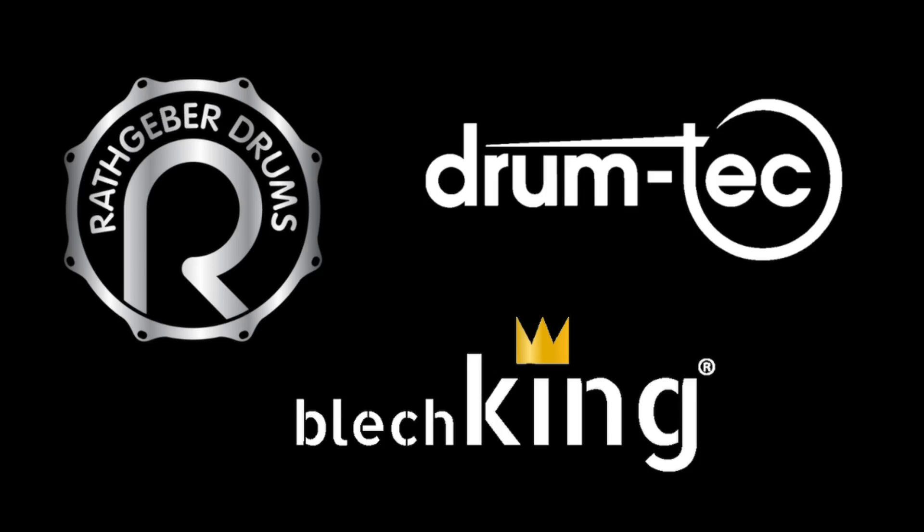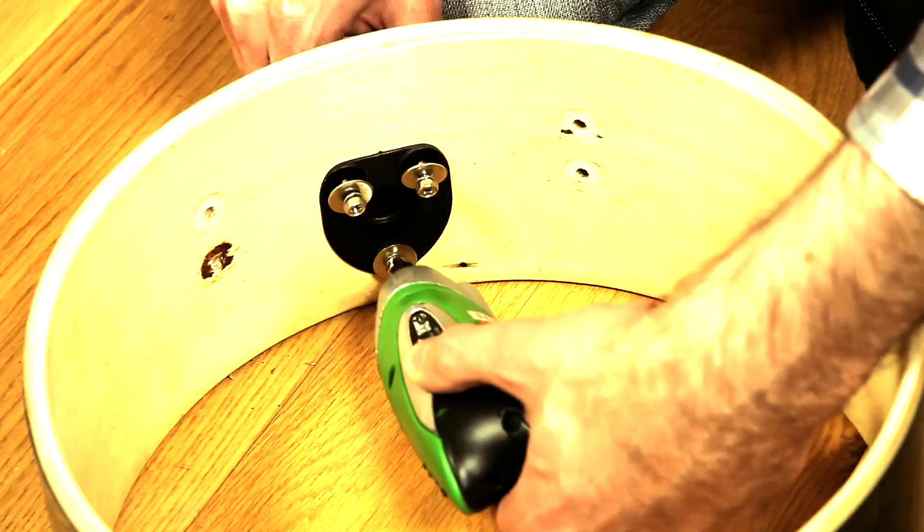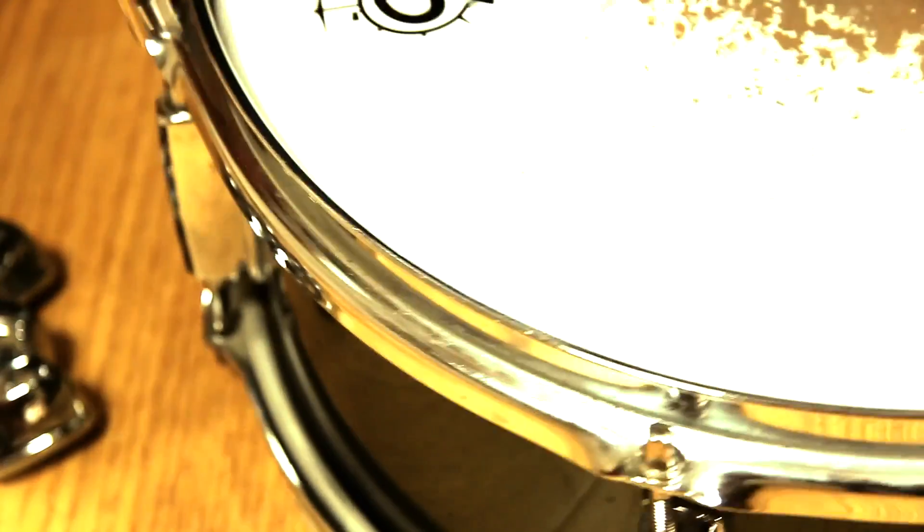This video series is presented by DrumTech, R-Drums and BlashKing. Welcome to the Acoustic to E-Drums conversion series. This and the following videos are about the conversion process of a Pearl Rhythm Traveler into an E-Drum Kit.